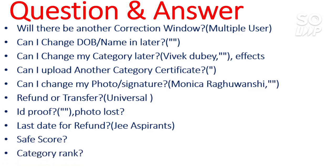What will be the category rank? I have made a video where I talk about percentile versus category rank, considering all categories. Your category rank will be calculated after all four attempts, so don't be confused by your current percentile. Overall there will be around 12 lakh students after four attempts, so your rank will be calculated according to that total.